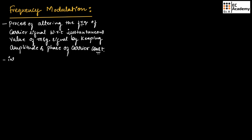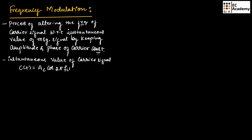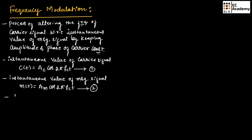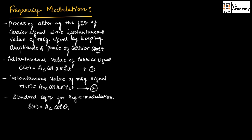Let us take the instantaneous value of the carrier signal as C(t) = AC cos(2π fc t) — equation 1. The instantaneous value of the message signal as m(t) = AM cos(2π fm t) — equation 2. The standard equation for angle modulation is S(t) = AC cos(θi(t)) — equation 3.